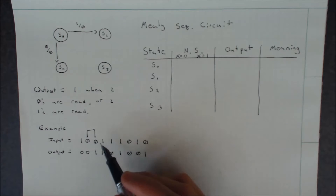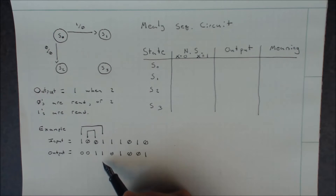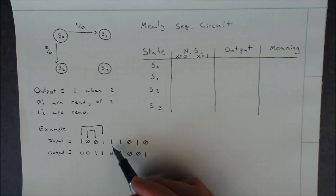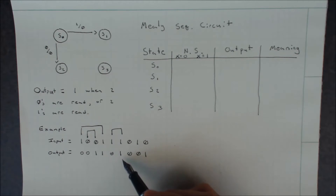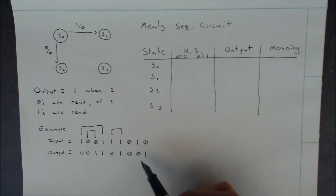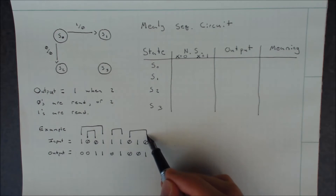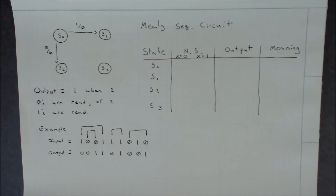If we then read a one, we now have two ones that have been read, so our output is again one. When we get our first new one, our output is zero. We get our second one, and our output is now one. We get our first zero — output is zero. We get our first one — output is zero. And then we get our second zero, and our output is one. This is the basic structure we're going to model this circuit with.